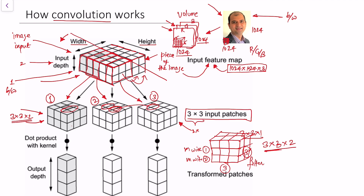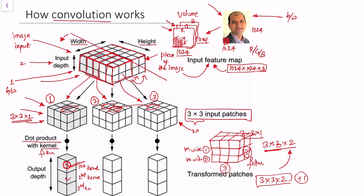Any filter of a given size must match the number of channels in the previous input. So we increase the filter's channels to 2, meaning this filter has 3 by 3 times 2 parameters, plus one bias. Now we multiply the filter with patch 1 and perform a dot product. When you perform the dot product of a 3 by 3 by 2 matrix with another 3 by 3 by 2 matrix, you get one value as output. Similarly, a second filter gives another output, and a third filter gives yet another.